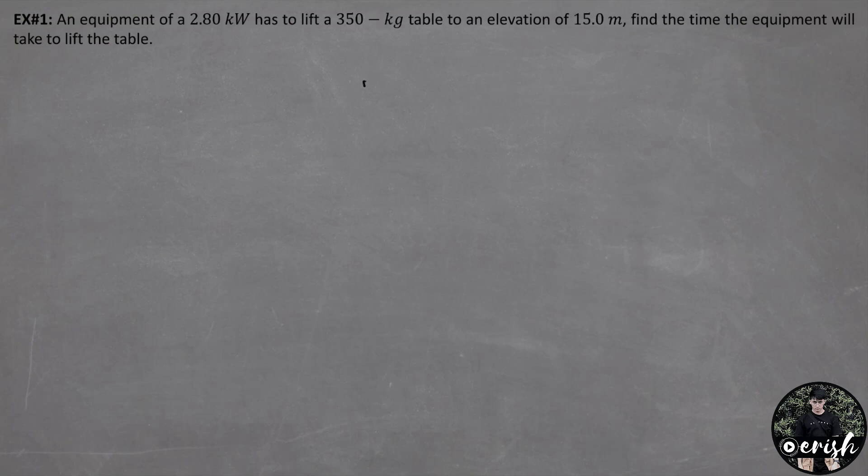So we have the equation power equals work over the time. For example, this is a table and it needs to be lifted up to the height of 15 meters. And the equipment has already given a power of 2.8 kilowatts. The weight of the table is 350 kilograms.